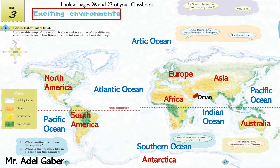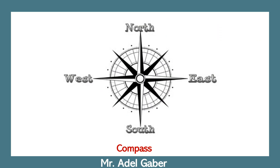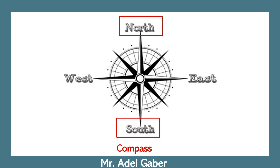Look at the compass. Look at the symbol with the points of the compass towards the top left of page 26. Look at this compass. What are the four points of the compass? They are north, south, east, and west.